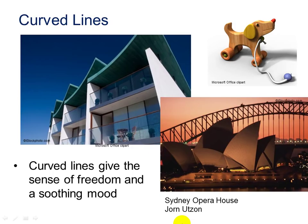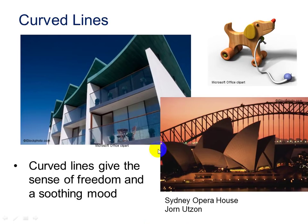Curved lines. Flowing curve lines are used in the roof of this apartment building, in the roof structure of the Sydney Opera House, and the Sydney Harbor Bridge in the background, as well as in this dog-shaped pull toy. Curve lines give the sense of freedom and a soothing mood. The Sydney Opera House is a world-famous work of architecture. The Danish architect Jorn Utzon won an international competition to design the structure. After extensive testing, Utzon decided to use a design based on sections of a sphere.